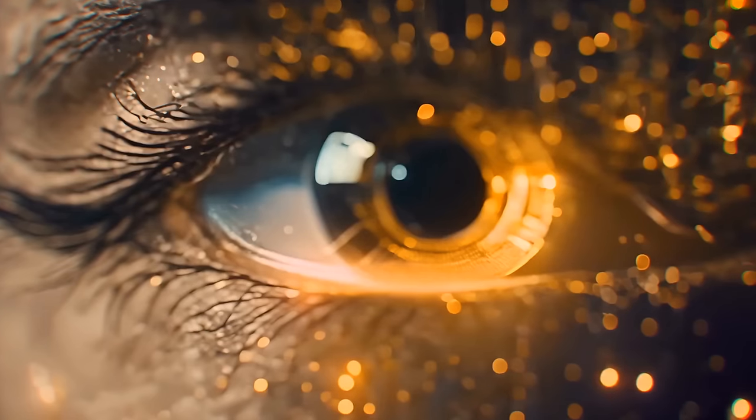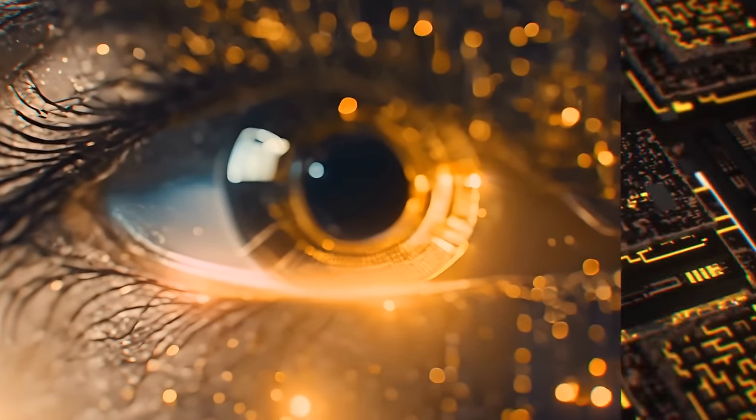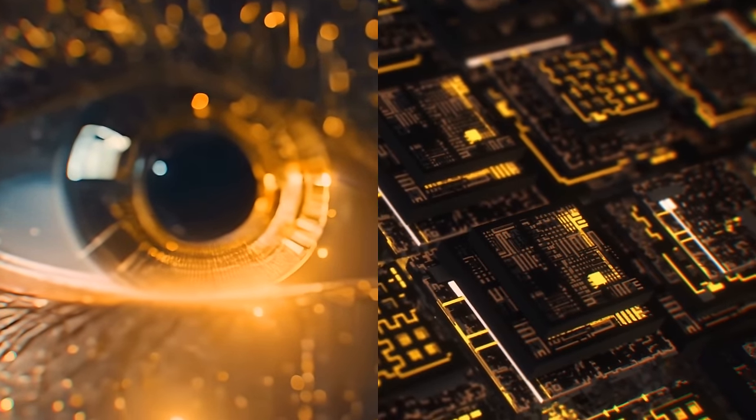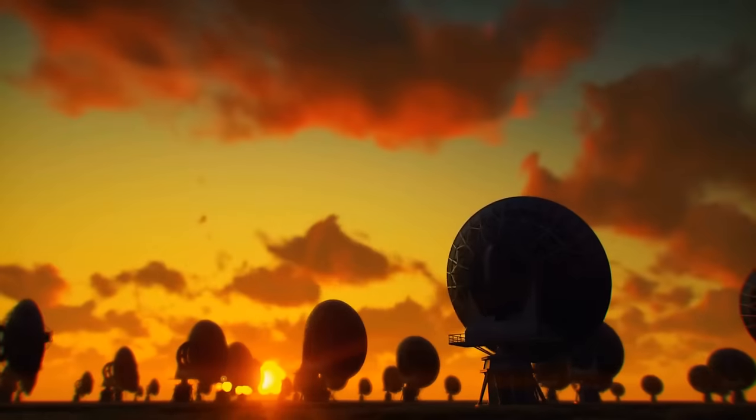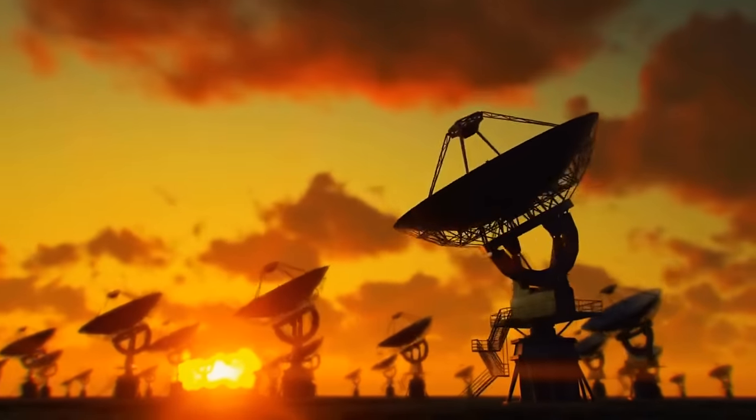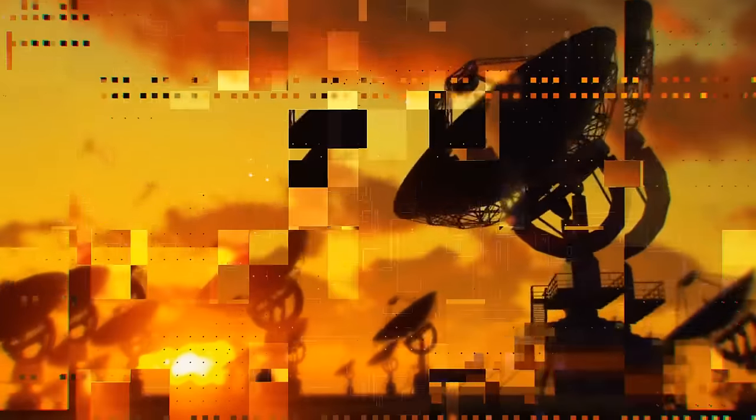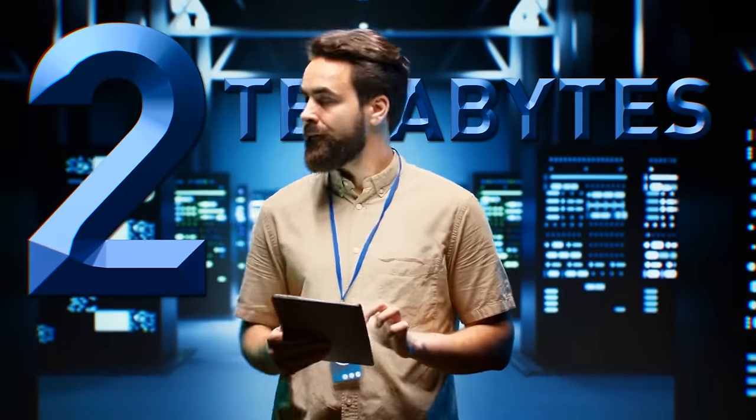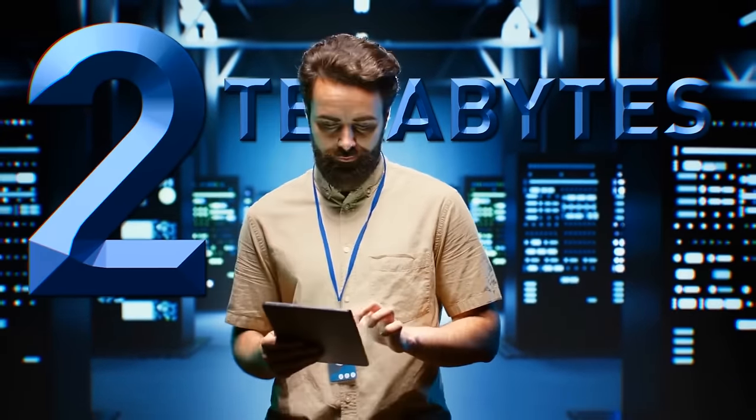SETI, together with other research organizations, built an AI-powered software system called the Very Large Array. It consists of 28 large dish antennas spread across a desert plain. When it starts working, the AI will be able to process 2 terabytes of data every second.